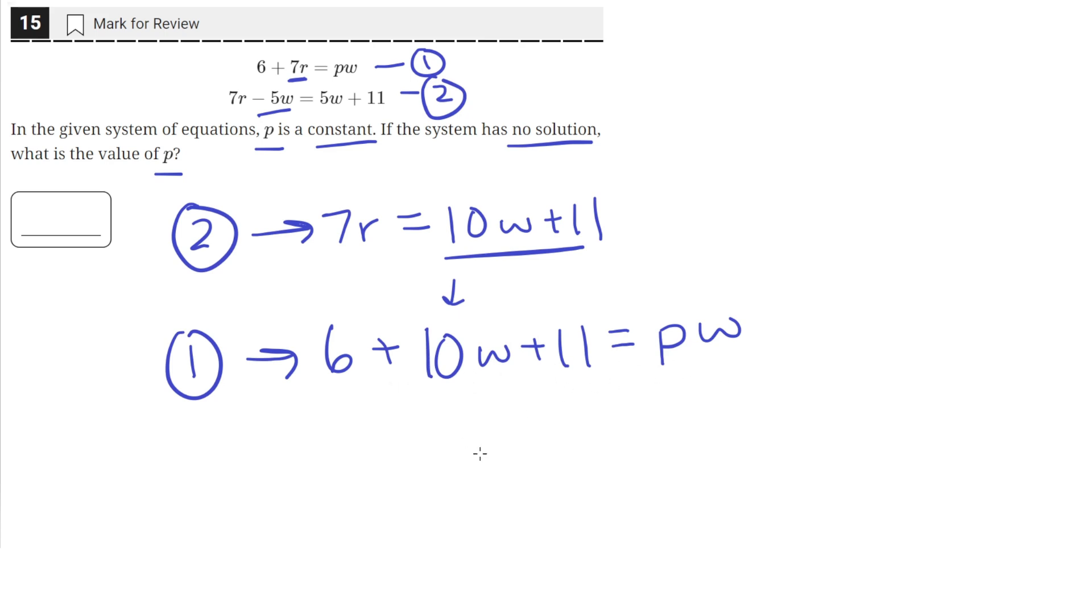So we need to find a value of p that when we move it over to this side of the equation, which we can do by moving 6 plus 10w minus pw plus 11 equal to 0. We just subtracted pw from both sides.